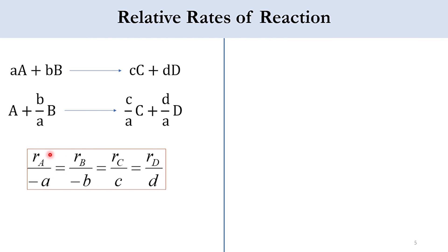This expression shows how fast B is disappearing with respect to A, or how fast C is appearing with respect to D. If we want to compute R_B, it is calculated as R_B = (b/a) × R_A, or equivalently −R_B = −R_A × (b/a).